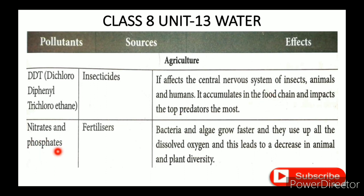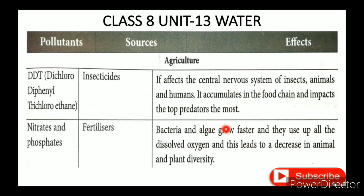Agricultural pollutants include nitrates and phosphates from fertilizers. Bacteria and algae grow faster, use up all the dissolved oxygen, and this leads to a decrease in animal and plant diversity. The algae also affect fish and water quality.